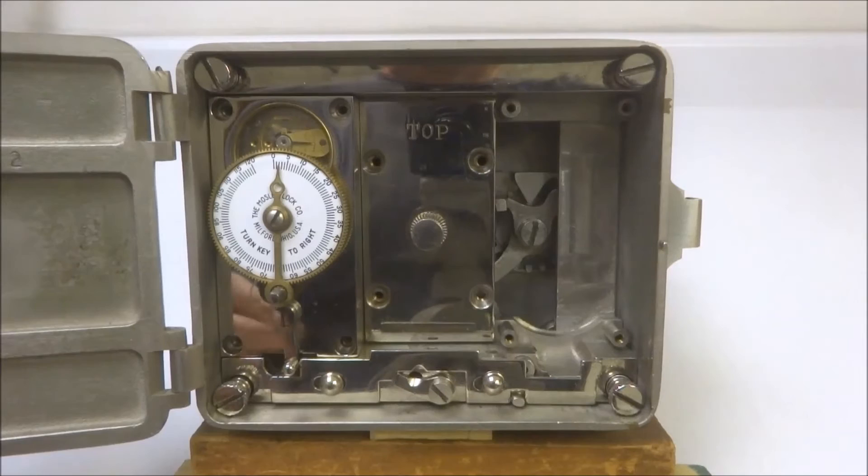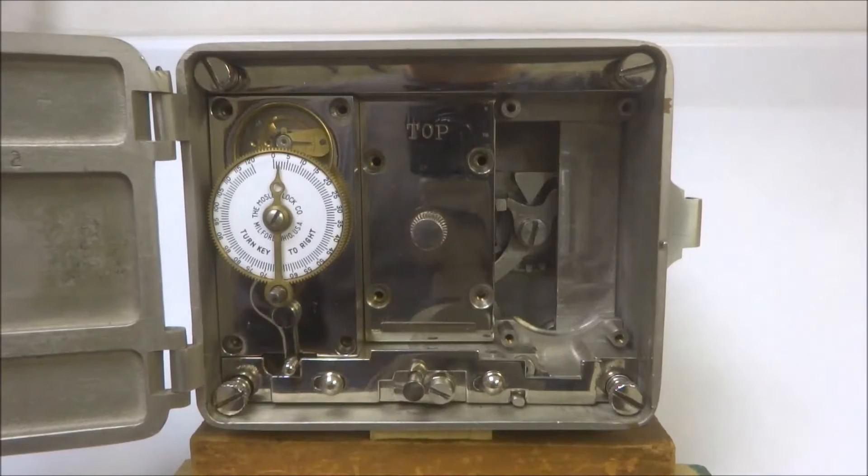But before I do that, obviously if you insert this back in, what it does is it keeps this lever permanently open, or in the downward position, so that the time locks can always function and allow this snubber bar to be moved to the right, and thus allow the combination to be dialed into the lock.